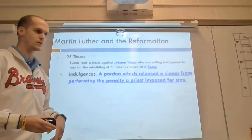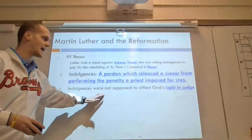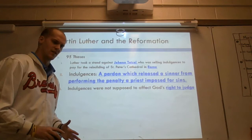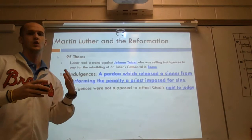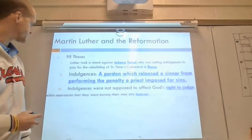Martin Luther starts to point out, 'No, that's not what it says. That's not right.' This is just step one in finding 95 things he believes the church is doing wrong. Indulgences were not supposed to affect God's right to judge — this is what Martin Luther keeps preaching. The church can't sell indulgences. The church can't forgive your sins. You can't buy forgiveness. And so people start listening to Martin Luther and wondering why what he's saying and what their churches are telling them are different.